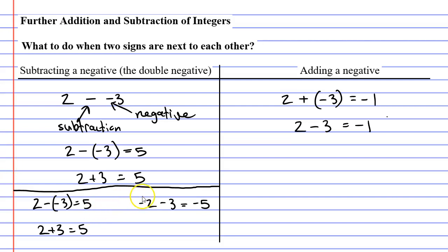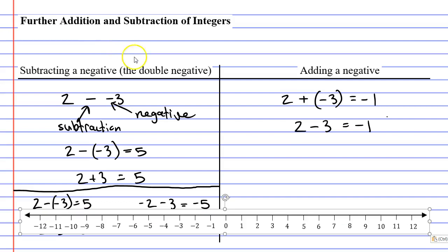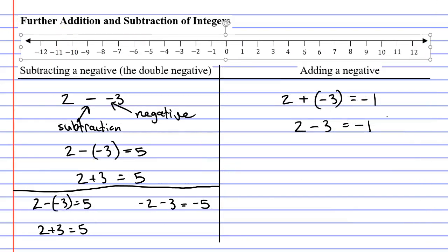And in case you're a bit confused about this, I'm going to bring up a number line, I'm just going to make some space here, and bring it up the top. And if you remember, when you use the number line, you start with the first number, which is negative 2.